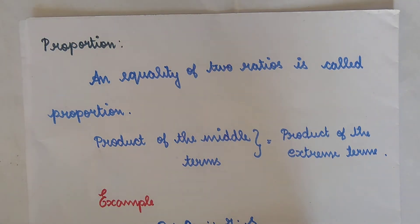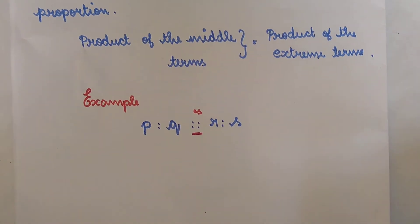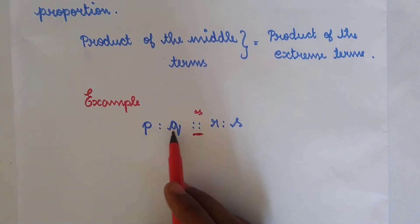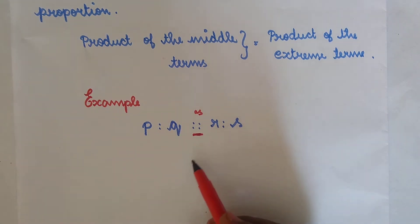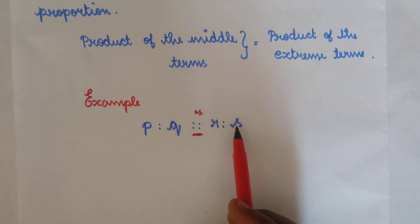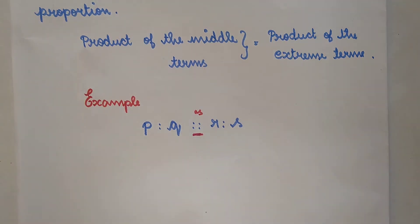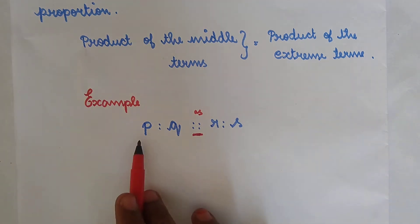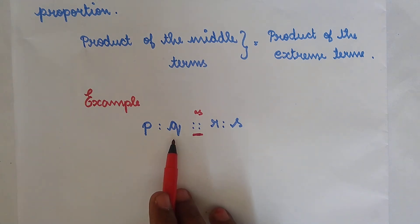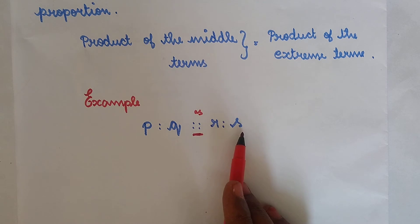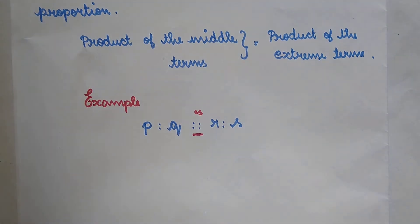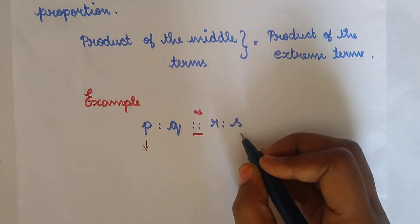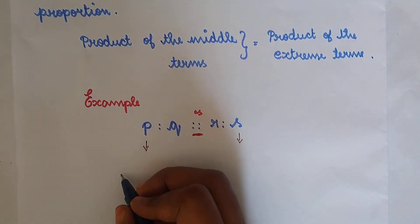We read it as P is to Q as R is to S. Here P, Q, R, S are said to be in proportion if P is to Q equals R is to S. In proportion form, we write P is to Q as R is to S, where P, Q, R and S are respectively the first, second, third and fourth terms of the proportion. Here P and S are called the extreme terms.